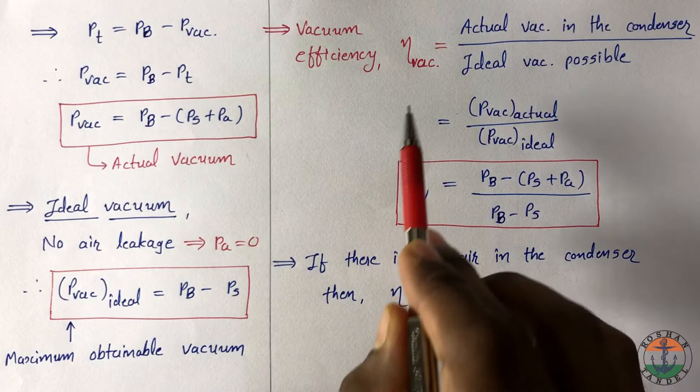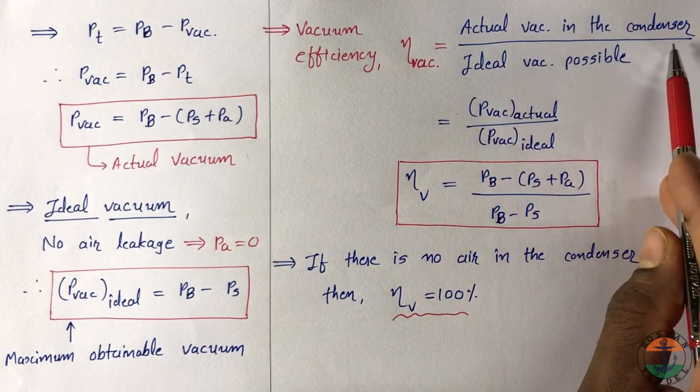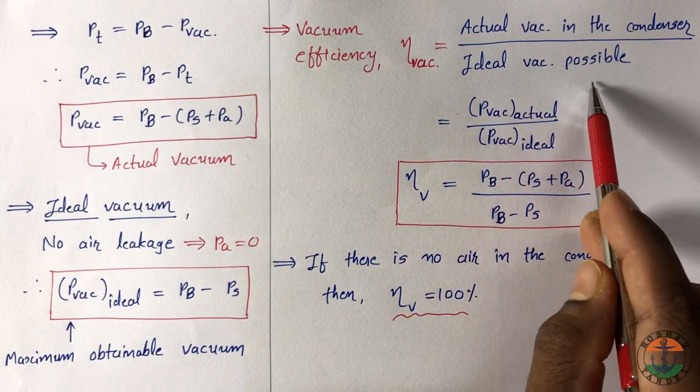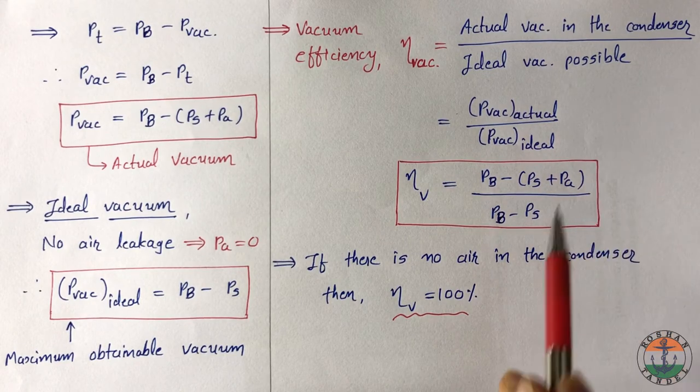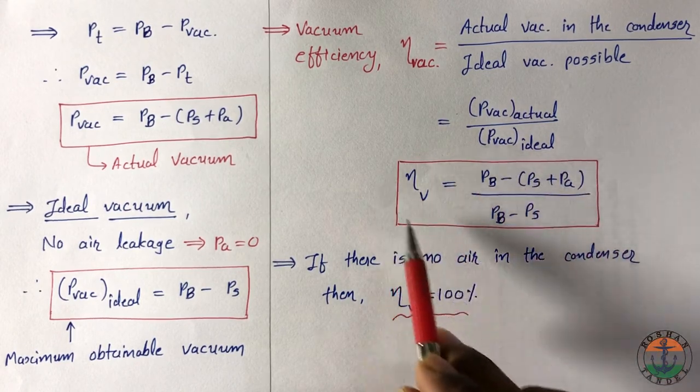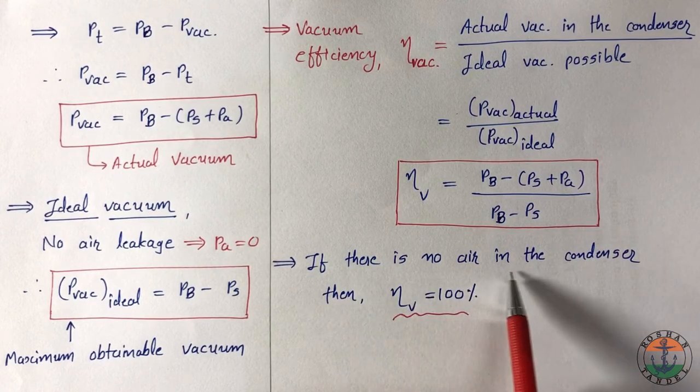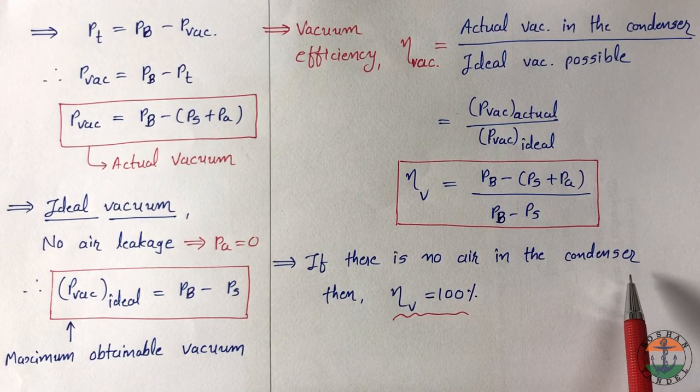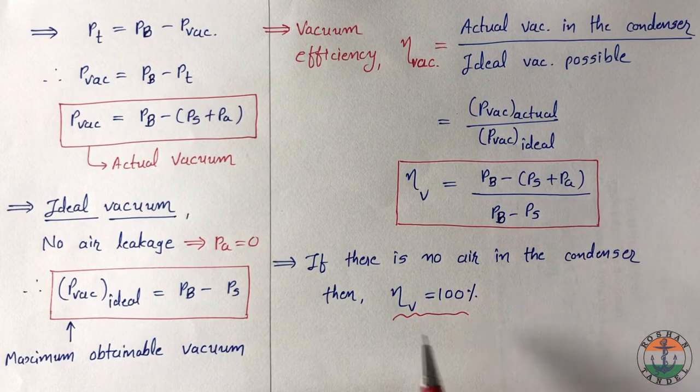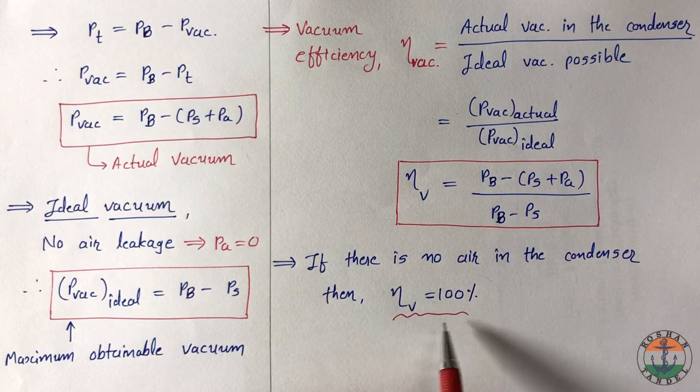Vacuum efficiency is defined as actual vacuum in the condenser divided by ideal vacuum possible. So we will get this equation. If there is no air in the condenser, then Pa equal to 0 and vacuum efficiency will be 100%.